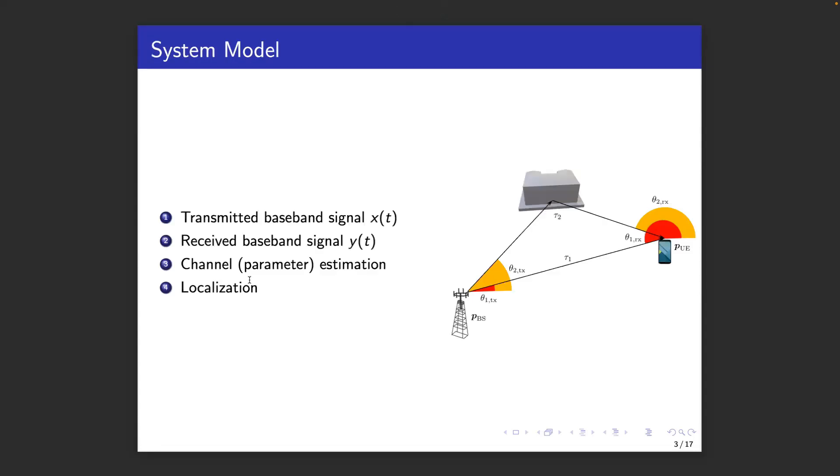We consider a scenario with a transmitter and a receiver. A transmitter is a base station, the receiver a user device, a UE, each equipped with an array in a multipath environment. The transmitted wideband signal goes over the air via the line-of-sight paths as well as non-line-of-sight paths via the objects.